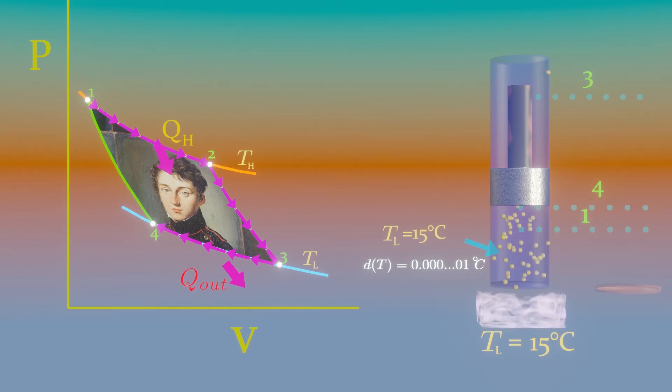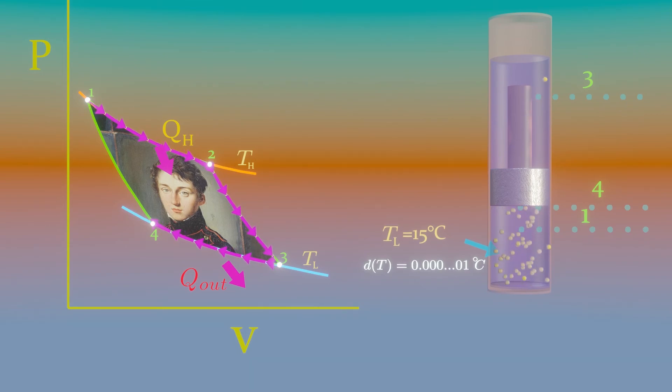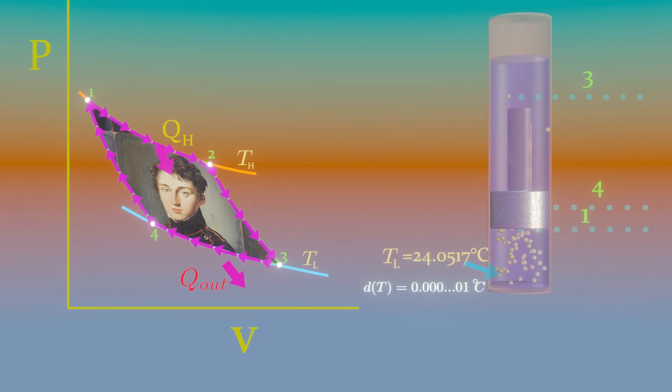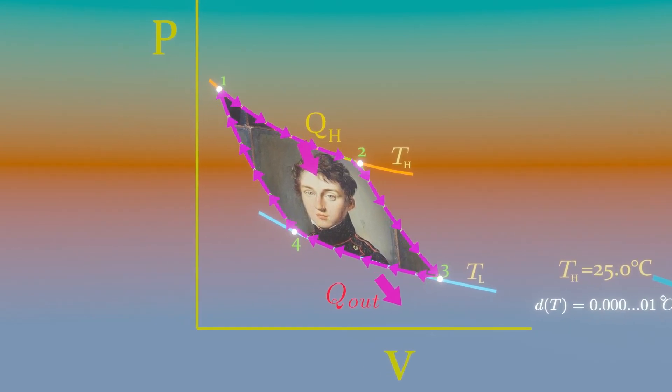Reversible adiabatic compression. State 4 is such that when the low temperature reservoir is removed, the insulation is put back on the cylinder head, and the gas is compressed in a reversible manner, so the gas returns to its initial state, state 1. The temperature rises from TL to TH during this reversible adiabatic compression process, which completes the cycle.